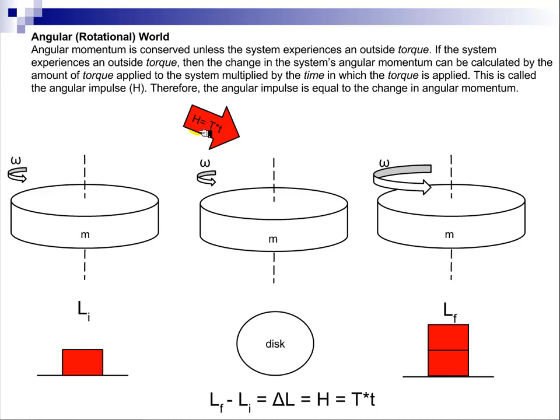And to find the angular impulse, we take the torque, and we multiply it times the amount of time that that torque is applied to our system.